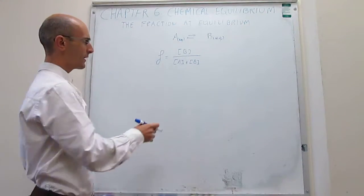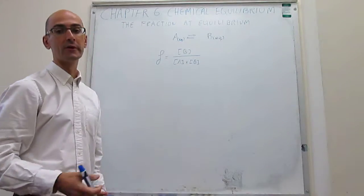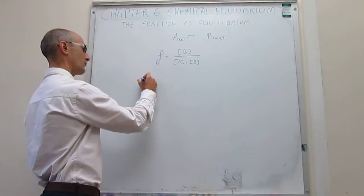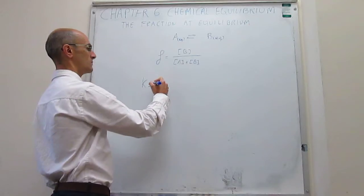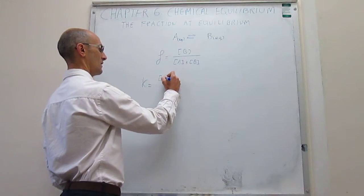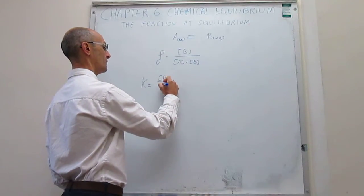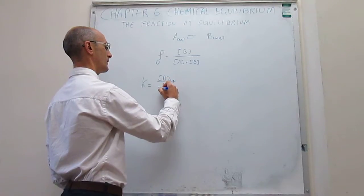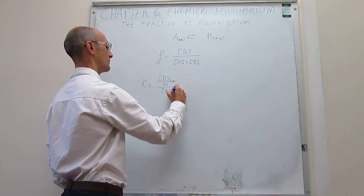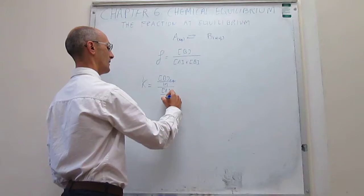That's what we define as the fraction of product at equilibrium. Now the question is, how do we calculate this from the equilibrium constant? The equilibrium constant for this reaction would be equal to the concentration of B at equilibrium over one molar, over the concentration of A at equilibrium over one molar.